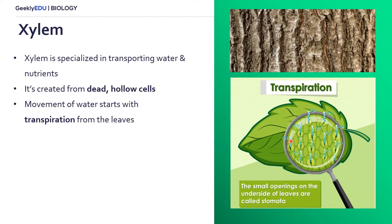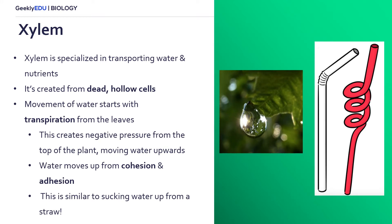Within the leaves there are structures called stomata, and water actually evaporates from these stomata, which creates negative pressure. This negative pressure starts at the top of the plant and is able to then move water up from the roots.